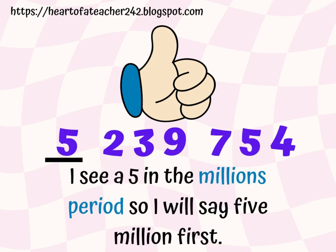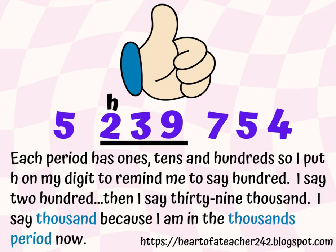I am now going to focus on the millions period. I see a five in the millions period, so I will say five million first. I have my little h on top of the two to remind me that I need to say 100 after I say two. Each period has ones, tens, and hundreds, so I put h on my digit to remind me to say 100. I say 200. Then I say 39,000. I say thousand because I am in the thousands period now.